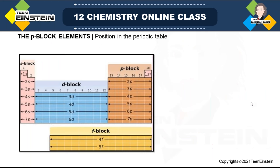Looking at the position of p-block in the periodic table, group 13 is the first group of p-block and group 18 is the last, giving a total of six groups. For s-block there are only two groups, and d-block spans groups 3 to 12. The f-block belongs to other chapters; this chapter is all about p-block elements.